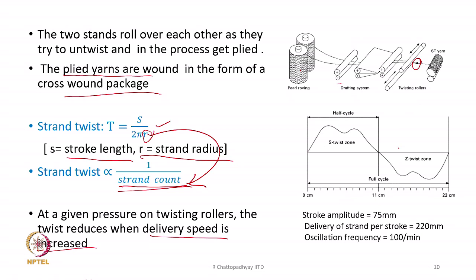Typically the stroke length is around 22 cm. S twist is followed by Z twist, and there is a zone of near-zero twist between them — in actuality it is a zone rather than a point, where twist gradually develops and then decreases. Along the length of the individual strand you will have Z, S, Z, S with near-zero portions between Z and S. Stroke amplitude is 75 mm, delivery of strand per stroke is 222 mm, and oscillation frequency is generally 100 per minute.